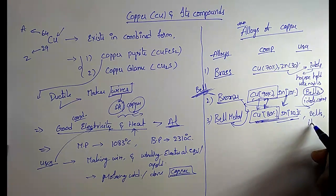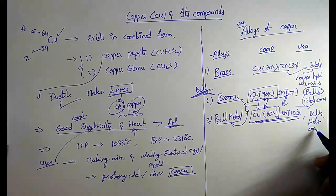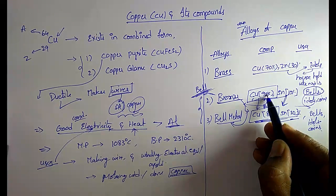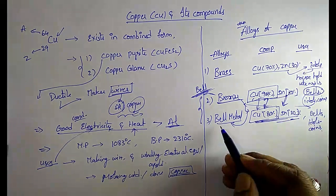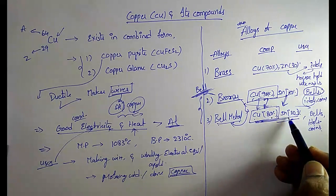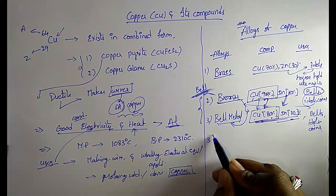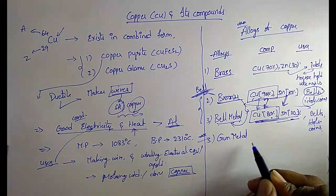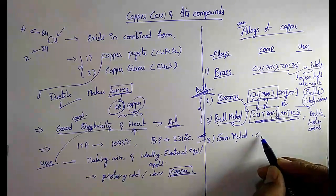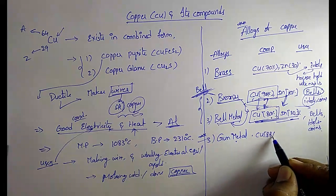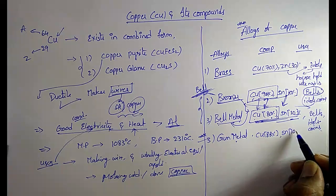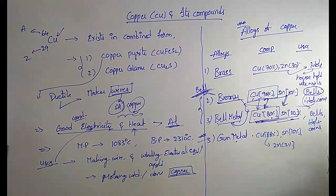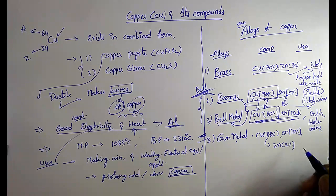To recap: in bronze, copper is 90% and tin is 10%; in bell metal, copper is 80% and tin is 20%. The next very important alloy is gun metal. In gun metal, copper is 88%, tin is 10%, and the remaining 2% is zinc.